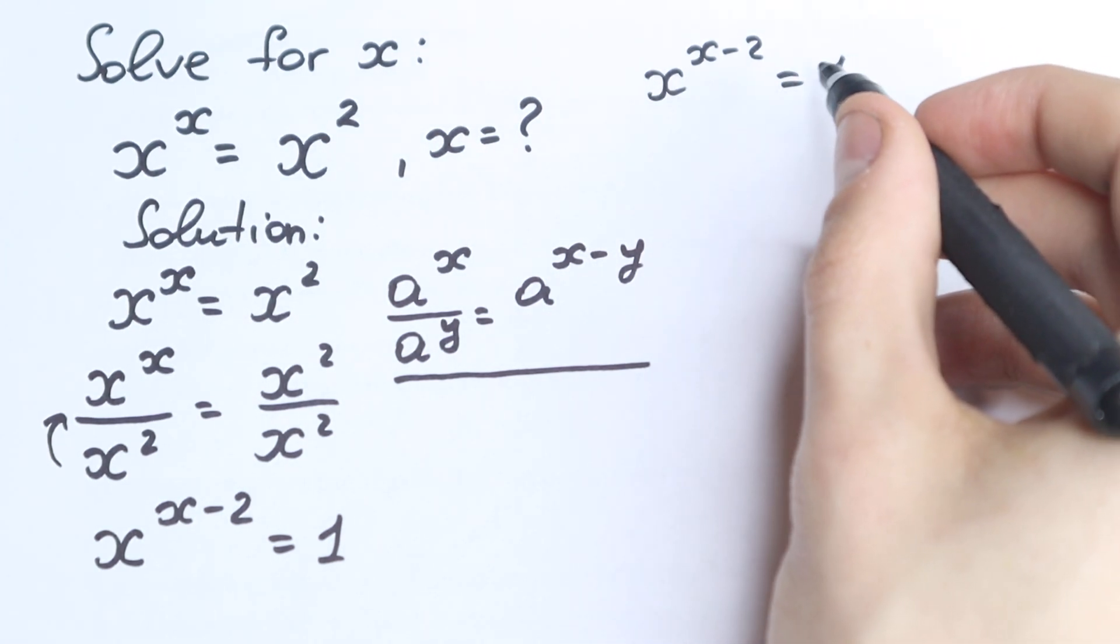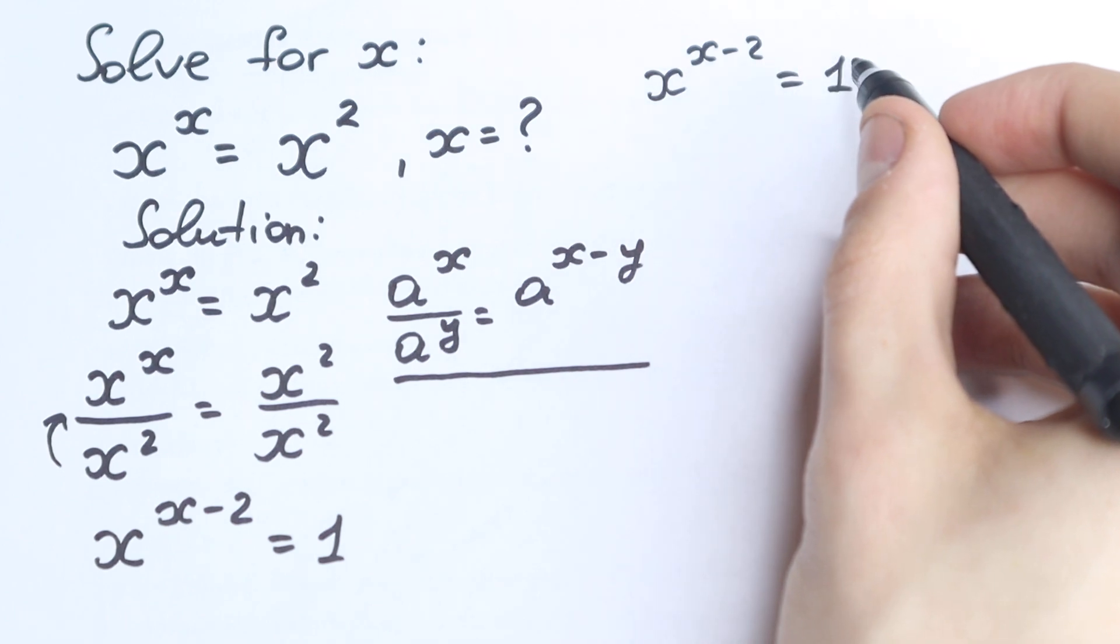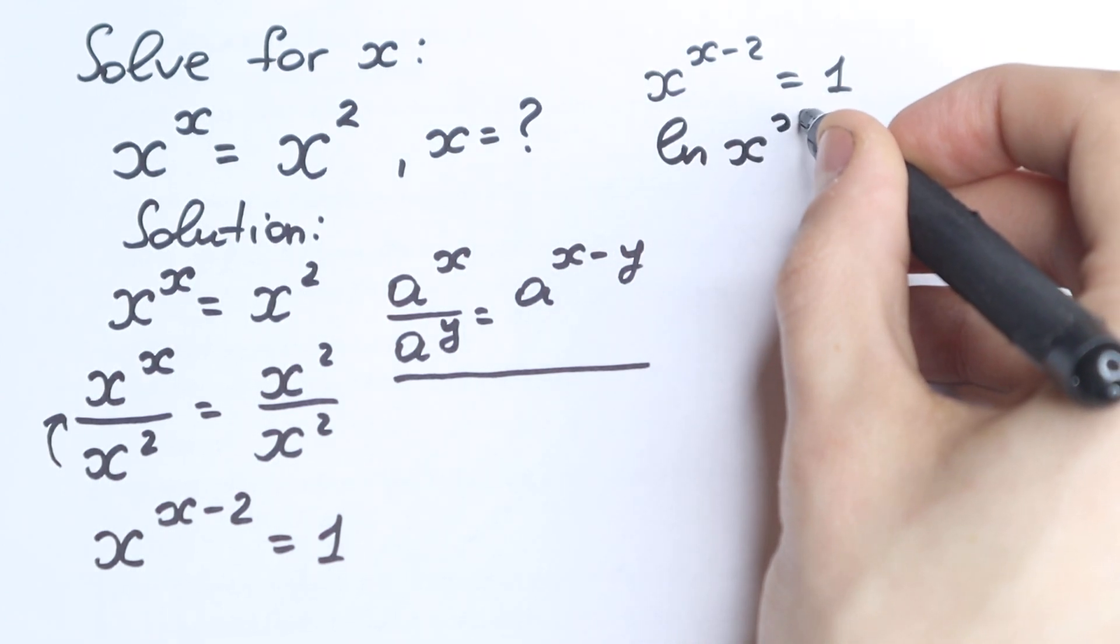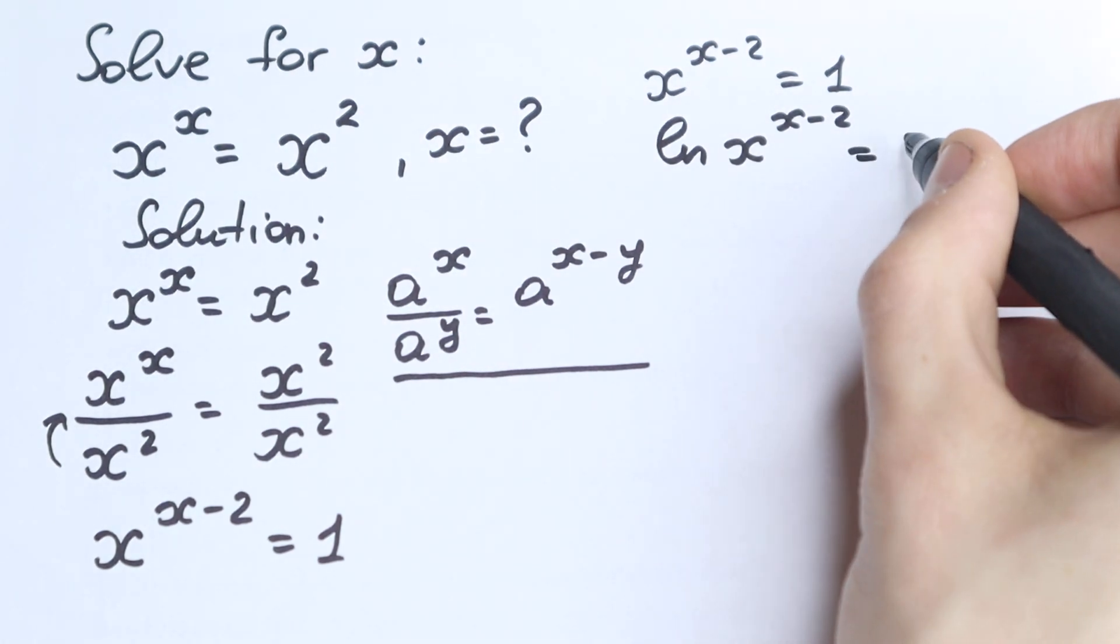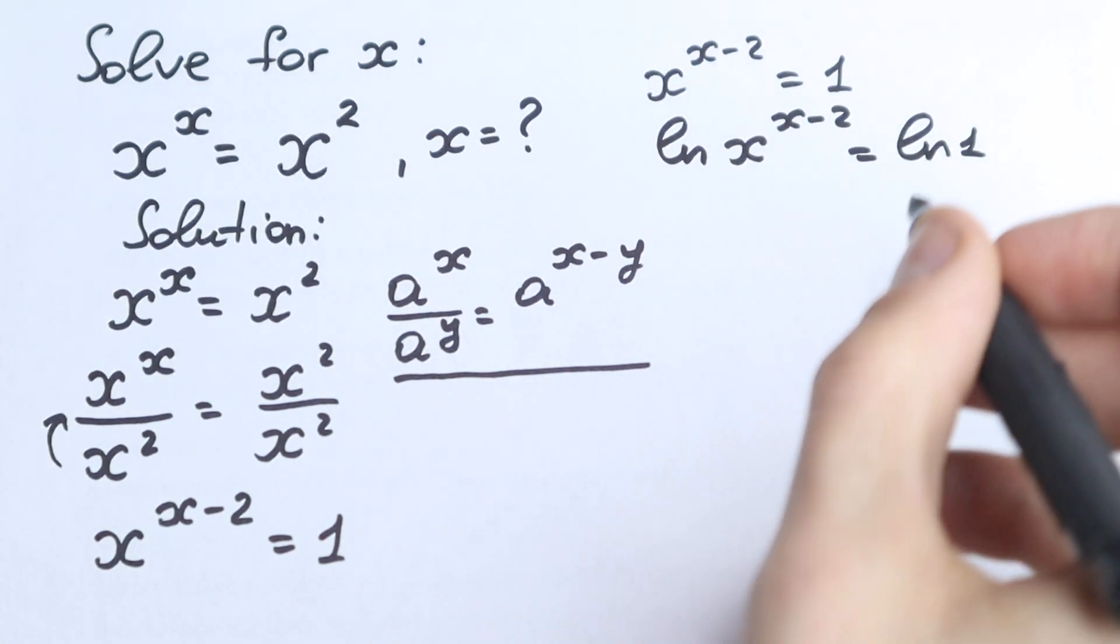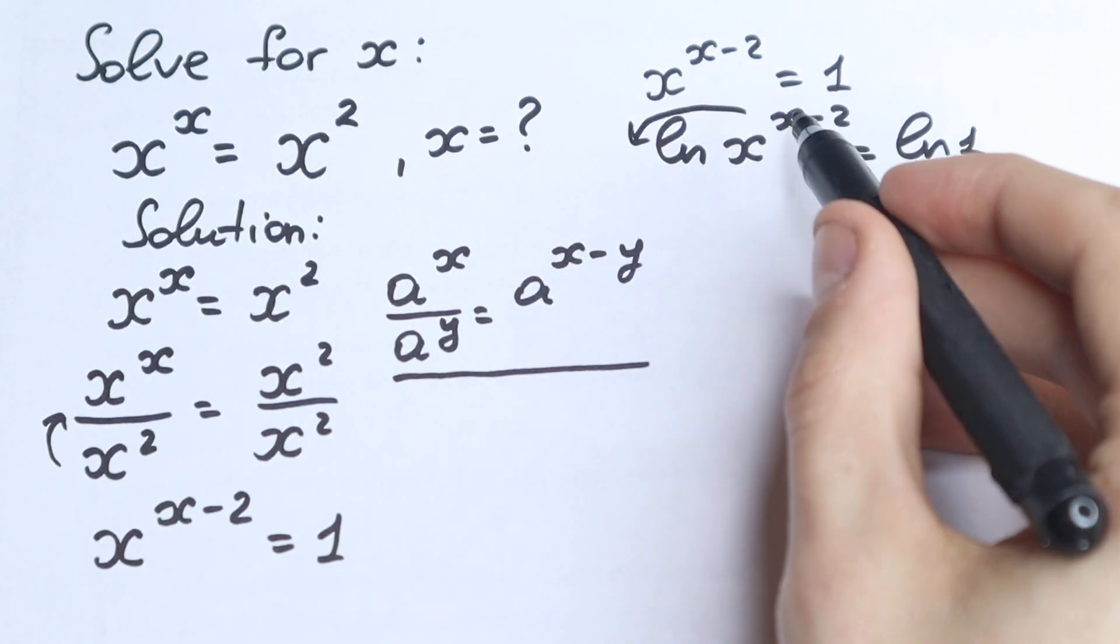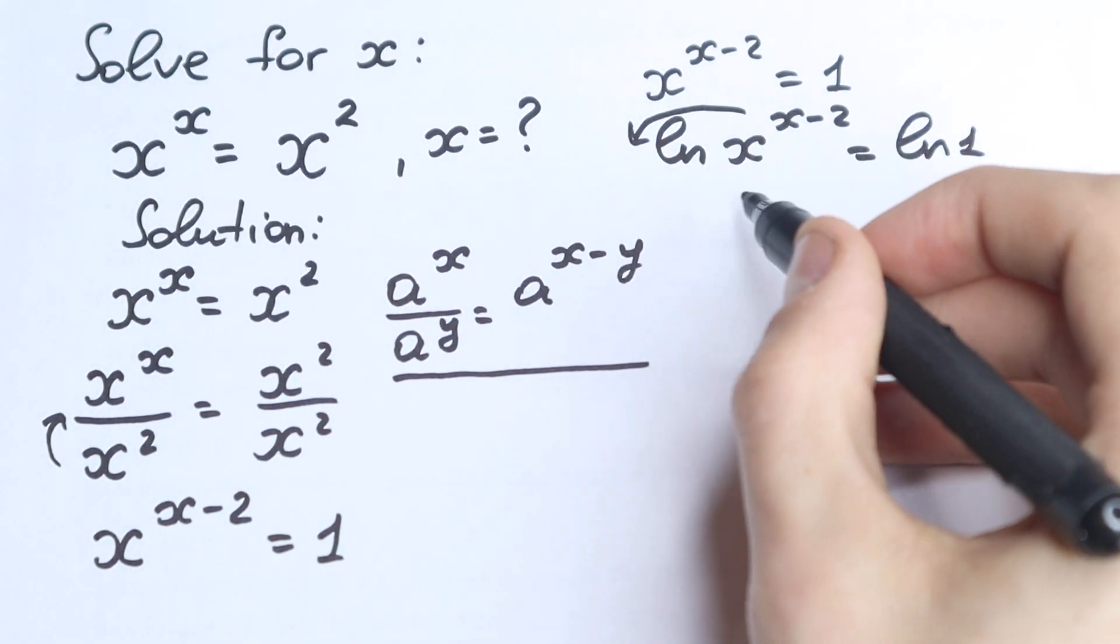Because if you apply natural log on both sides, so right here and right here, so we have natural log of x to the power x minus 2 equal to natural log 1, okay, natural log 1. And this power goes right here, this is the main log property.